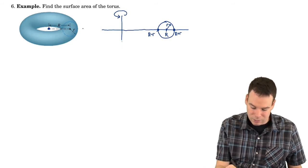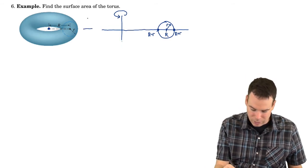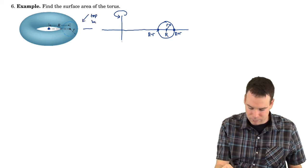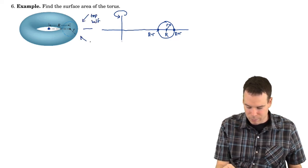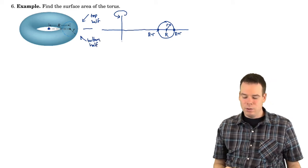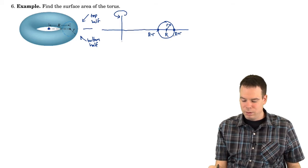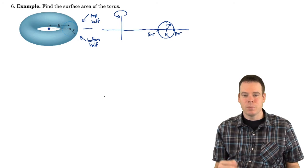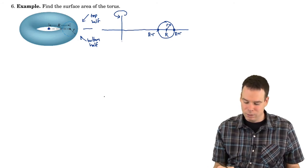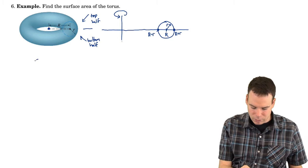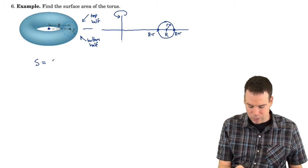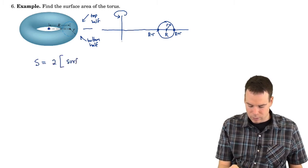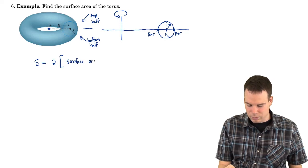So the thing to notice here is that there's really two halves here. There's a top half and a bottom half. And so what I can do is I can just ignore the bottom curve and focus on just revolving the top curve around the y-axis and then multiply by 2 to get the surface area of what results.